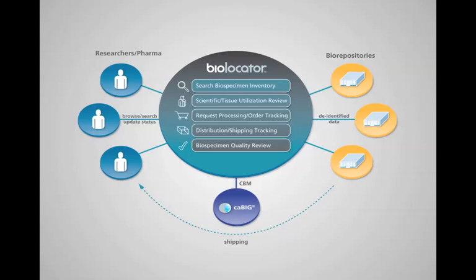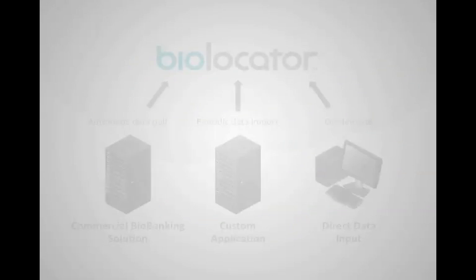BioLocator can work with a single biobank or multiple banks. Disparate biobanks can be linked together to provide a single, de-identified view of biospecimens. All specimen data is centrally located to ensure fast and secure search response times, while the specimens themselves remain at their original sources.